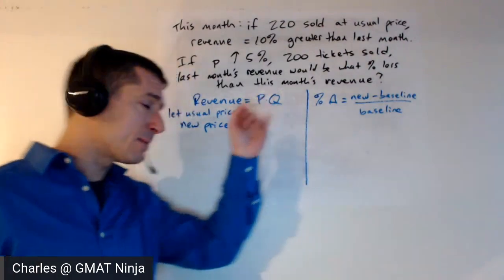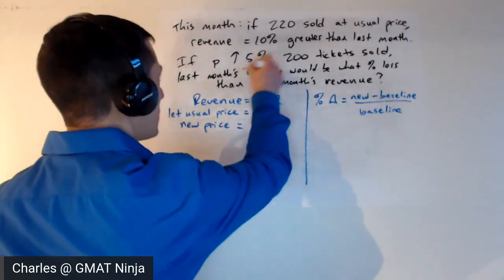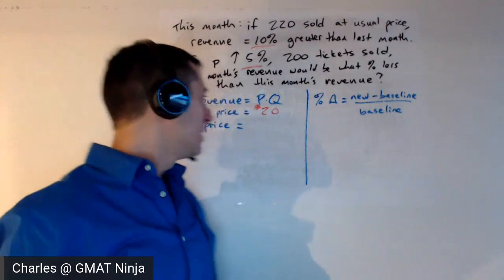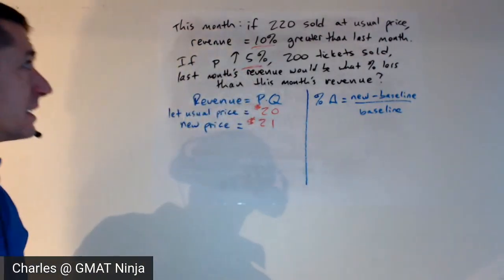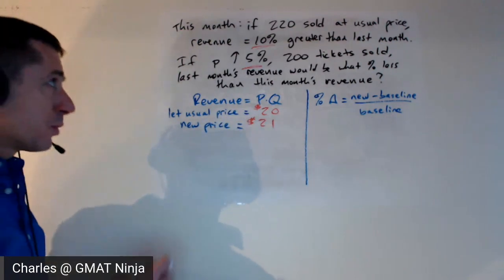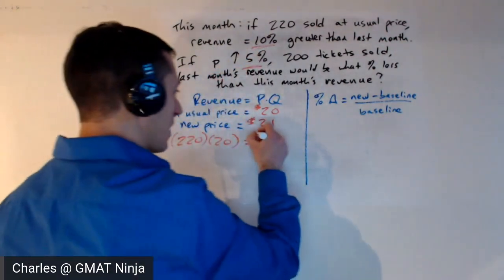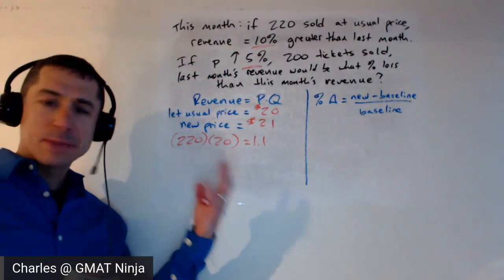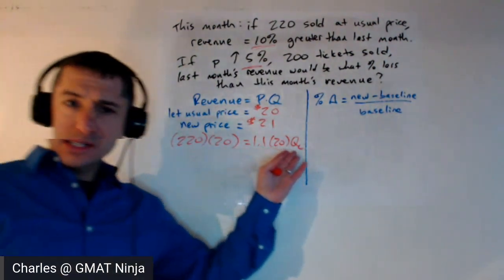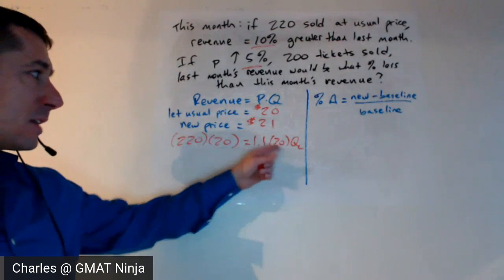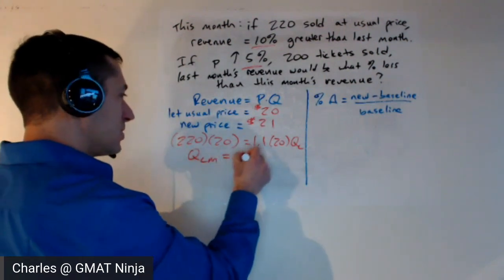Revenue — price times quantity. So let's just pick a price. Let's say the price is $20. Why $20? It seems to make sense with the 5% and the 10% here — we'll get nice even numbers. So the new price would be $21. This month, if 220 had been sold at that usual price, our total revenue would have been 220 times $20, and that would have been 10% greater than last month's revenue — so 1.1 times last month's revenue. Last month's revenue would have been $20 times whatever the quantity was last month. The 20s cancel out: 220 divided by 1.1 gives us a quantity from last month of 200.